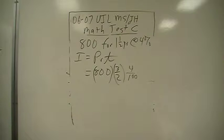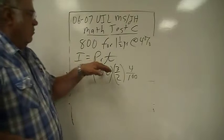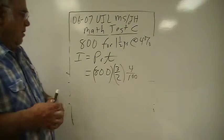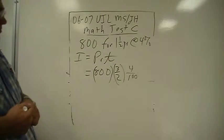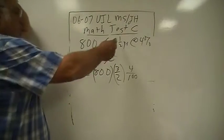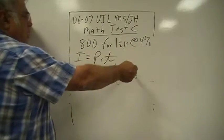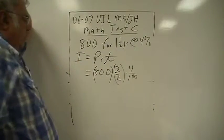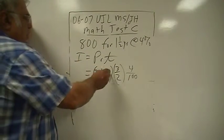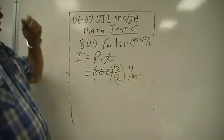Alright, for this one, interest rate is principal times rate times time. One and a half years, you can change that to three halves. Four percent is four over a hundred. These zeroes go out.